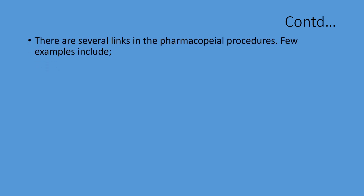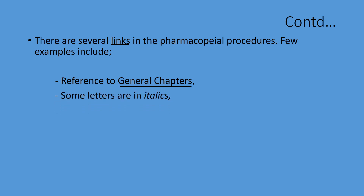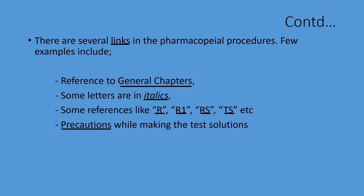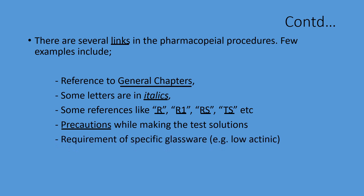There are several missing links in the pharmacopoeia procedures. A few examples include: references to general chapters, some letters written in italics, some references like R, R1, RS, TS, etc., precautions while making the test solutions, requirements of specific glassware — for example, low actinic. These kinds of references are present throughout.